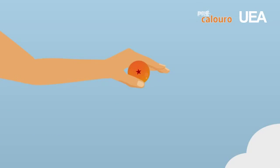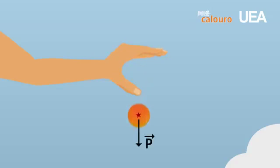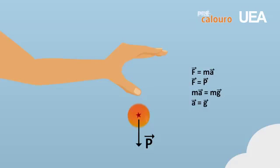Vejamos agora a situação em que uma partícula é abandonada — preste atenção neste termo — e cai verticalmente a partir da velocidade inicial nula. A partícula está sob a ação exclusiva da força peso. Se nós aplicarmos o princípio fundamental da dinâmica, a segunda lei de Newton, após o instante inicial T₀ igual a zero, teremos que F resultante é igual a massa vezes aceleração. Mas F é o peso, igual a massa vezes g. Portanto, MA = MG, e concluímos que a aceleração vetorial de uma partícula sob a ação exclusiva de seu peso é igual ao vetor campo gravitacional G.